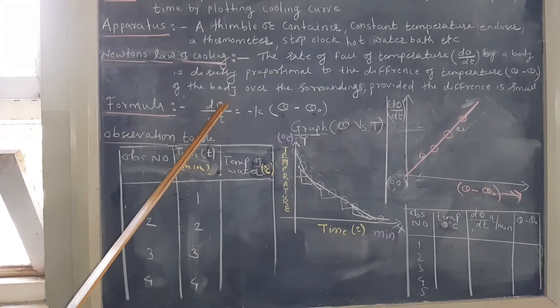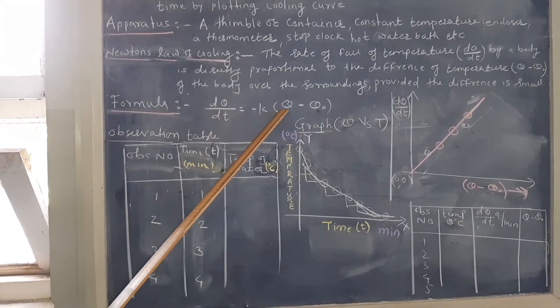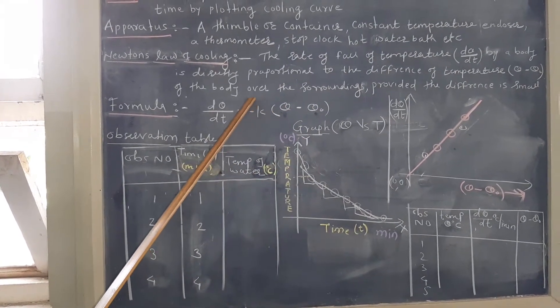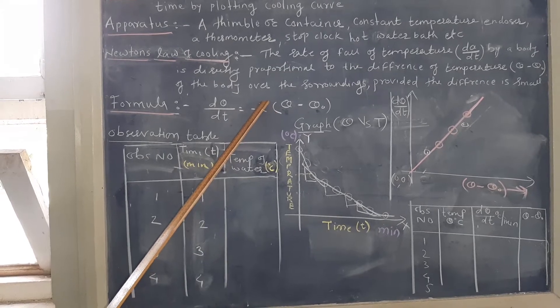Here the rate of fall of temperature dθ/dt is directly proportional to the excess temperature θ - θ₀. K is nothing but the constant of proportionality.